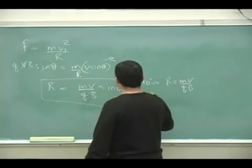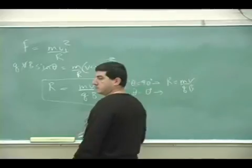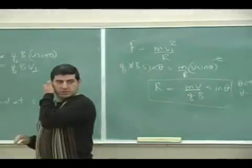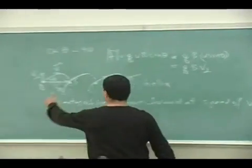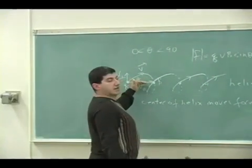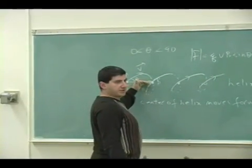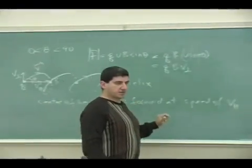If the theta is 0, you get what? 0. Does that make sense? So if it comes in completely parallel, it has no radius. So that makes sense also.